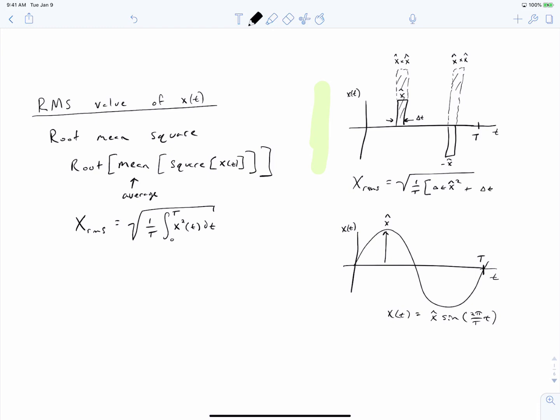So the first square that we have to consider has an area of delta t times x hat squared, and the second area that we must consider has an area of delta t, again, times x hat squared, again. And we can then easily evaluate this as 2 delta t over t x hat squared, the square root of this quantity.